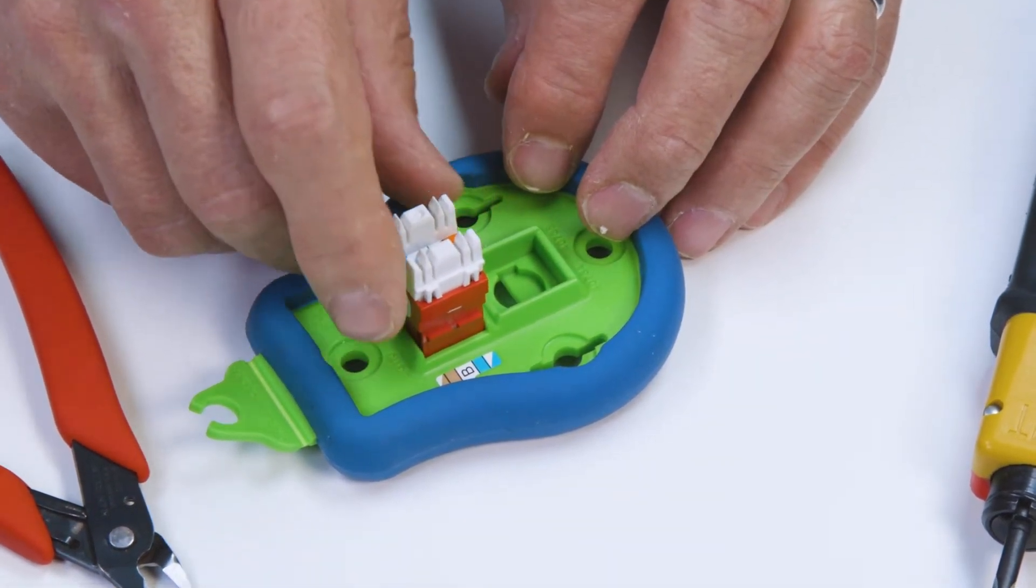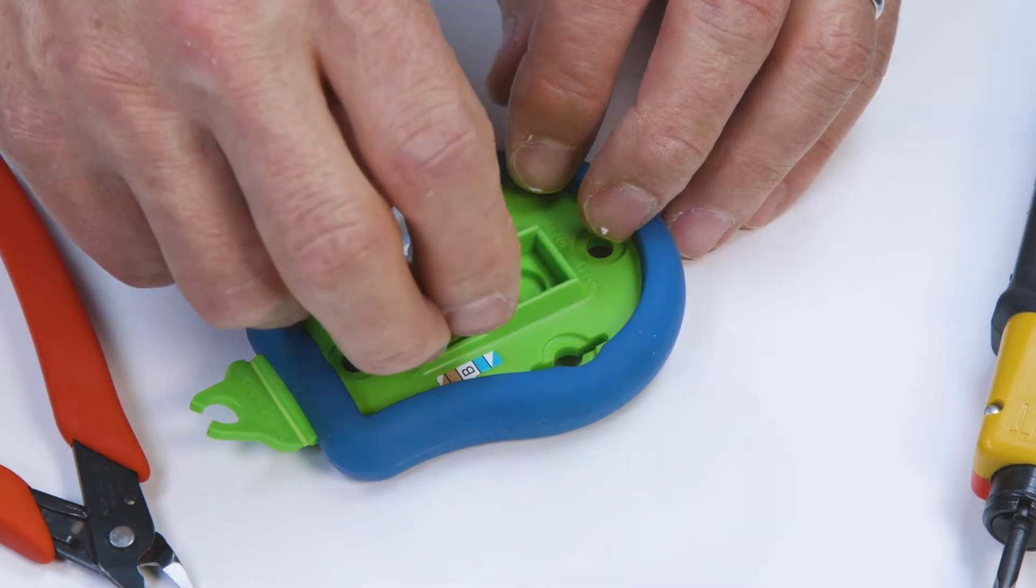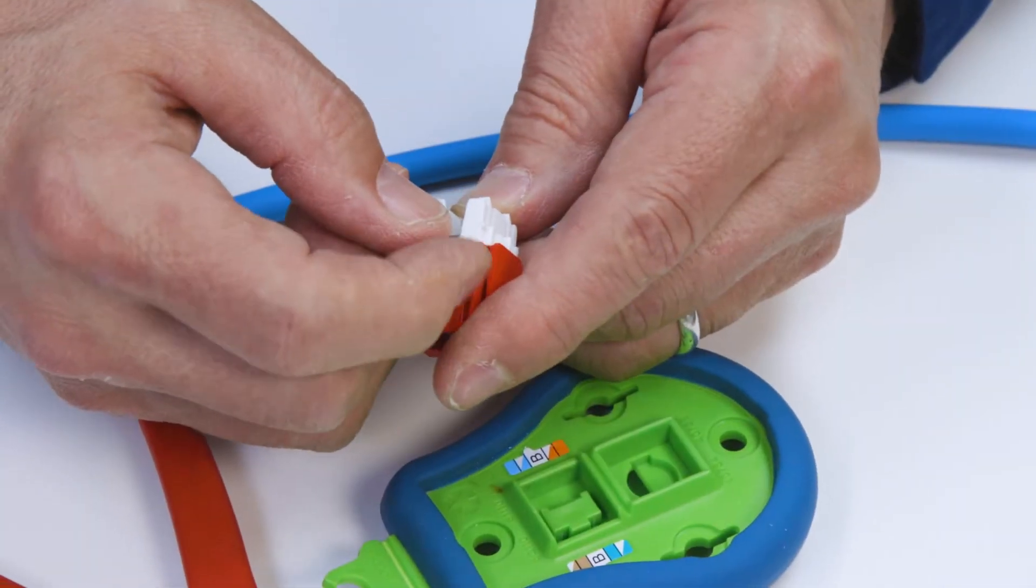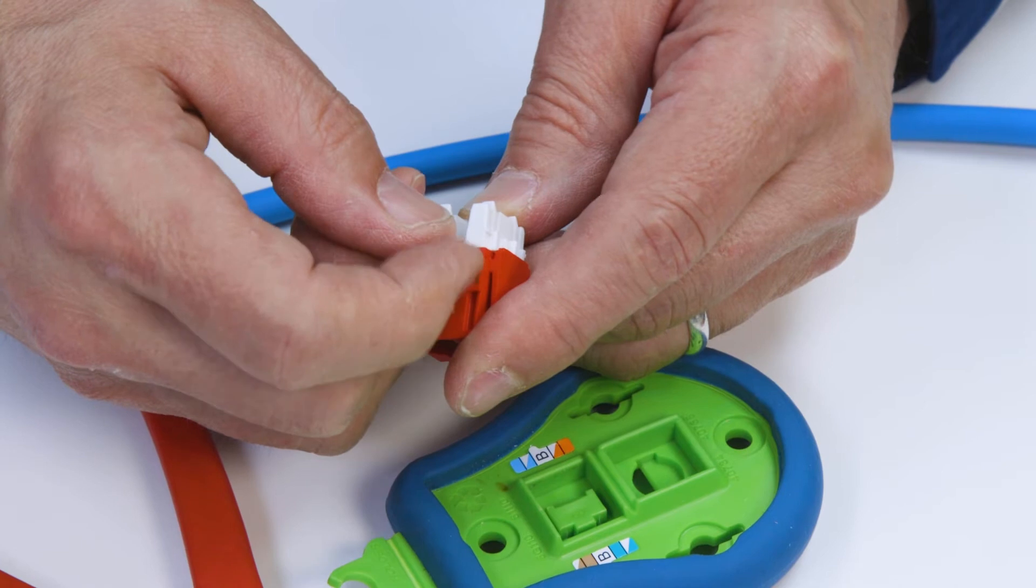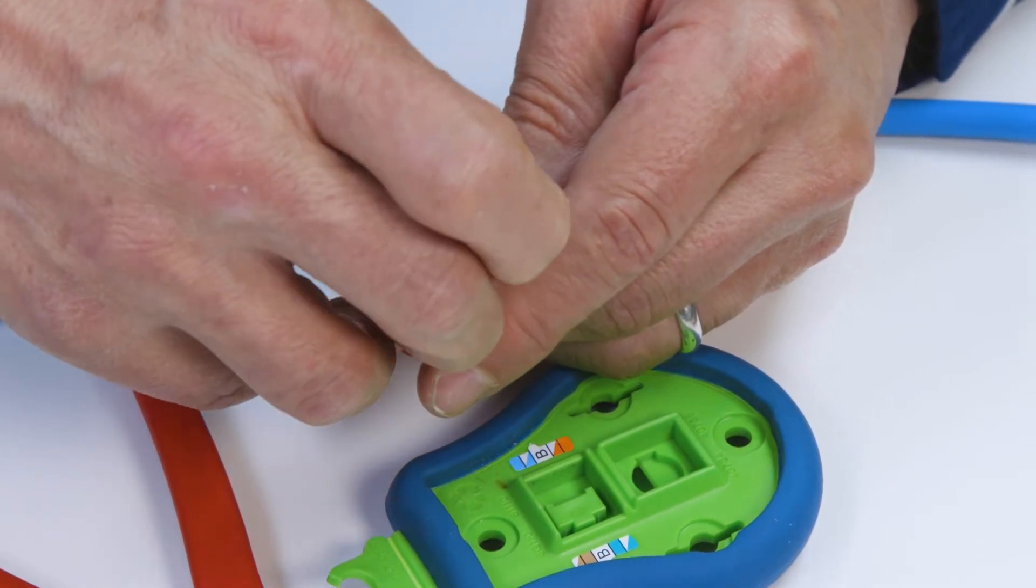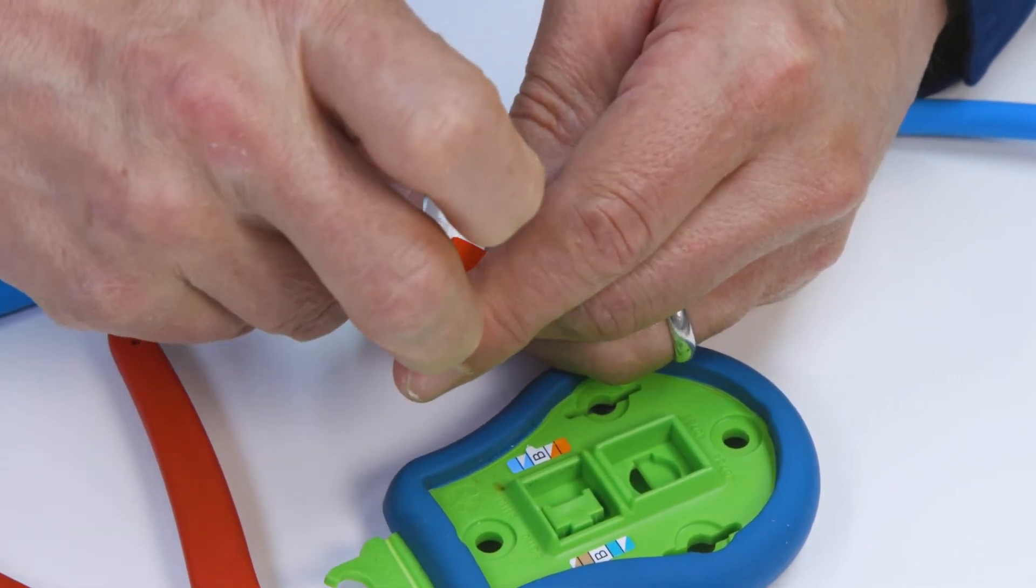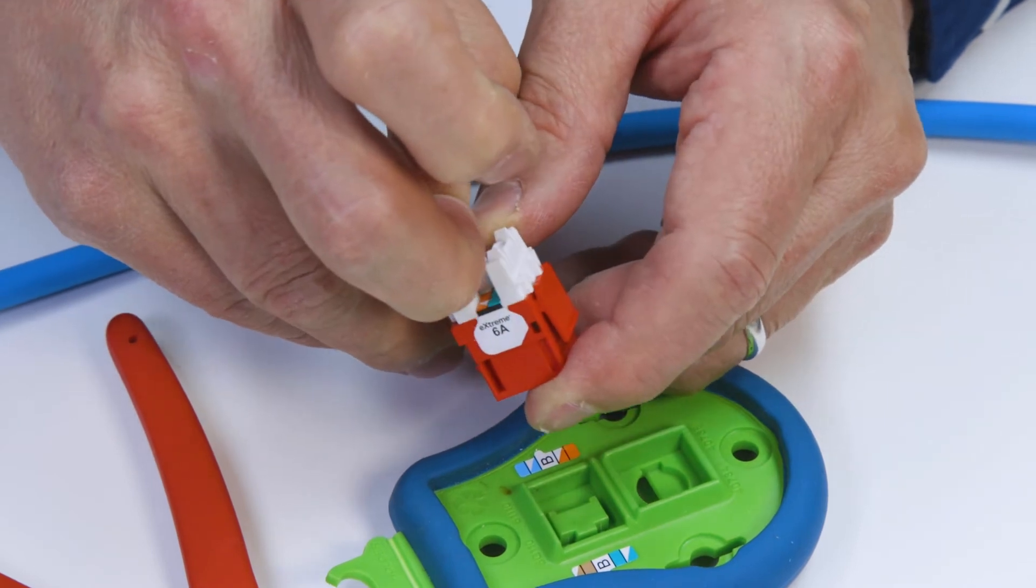The extreme jack features dual layer wiring labels. Should you need A labeling, simply pull back the top layer to reveal the A wiring diagrams.